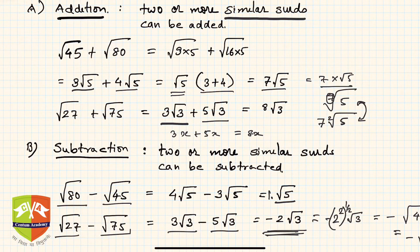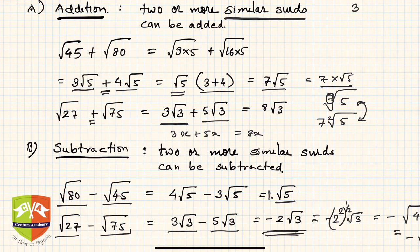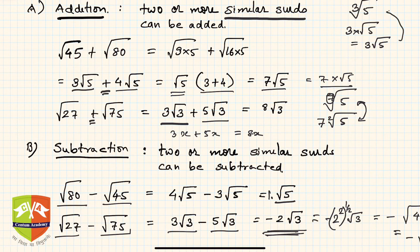To summarize: we learned about similar SIRDs and that only similar SIRDs can be added and subtracted. For multiplication and division there is no such restriction. Whenever you see a plus or minus sign, check similarity first before operating. Also, be careful not to confuse the third root of 5 — where 3 is inside the root — with 3 times √5, where 3 is written outside. These are different quantities.